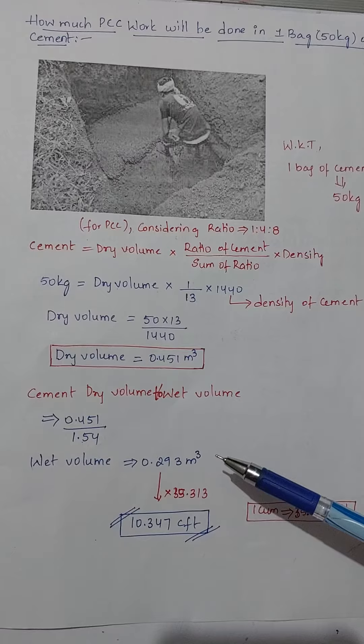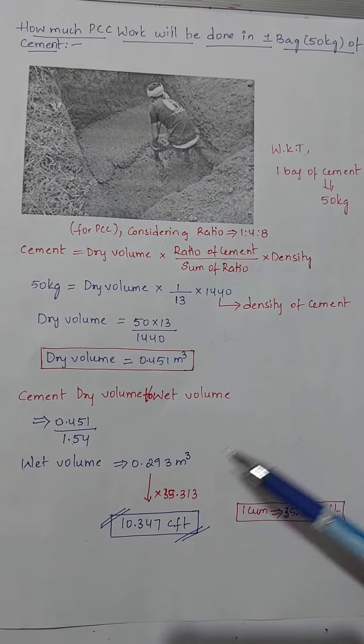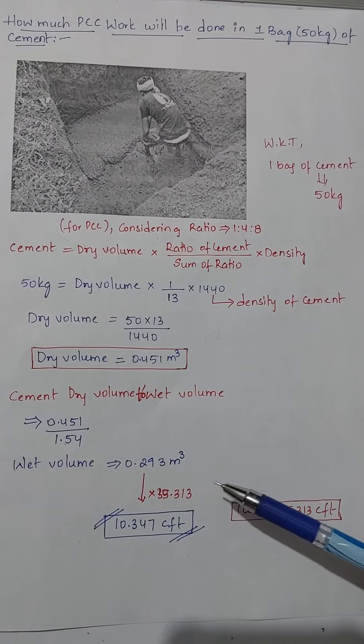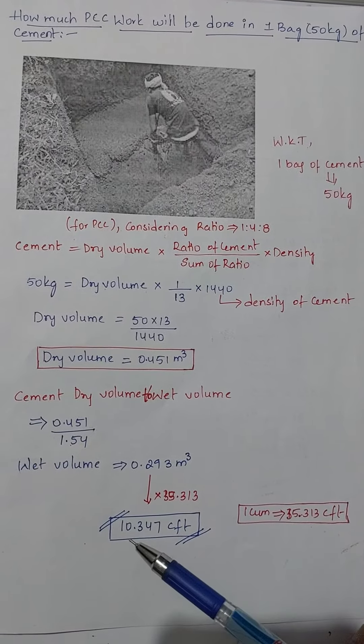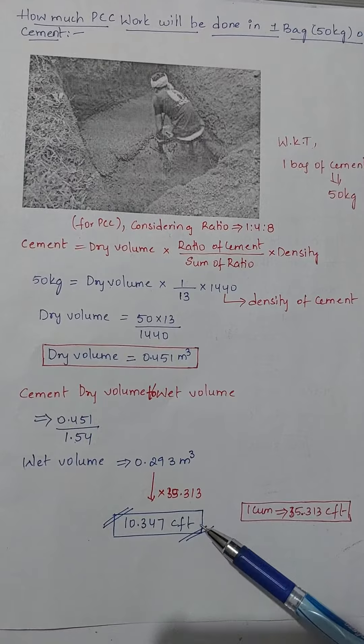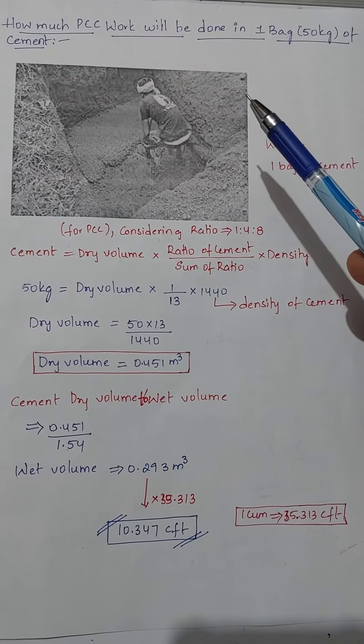So that we will get the wet volume is 0.29 cubic meter. If we do multiplication with 35.313, we can convert meter cube to CFT, so that we will get 10.347 CFT of PCC work we can do by using one bag of cement.